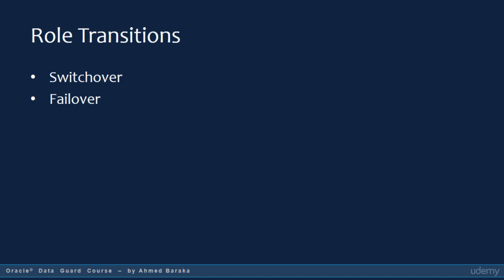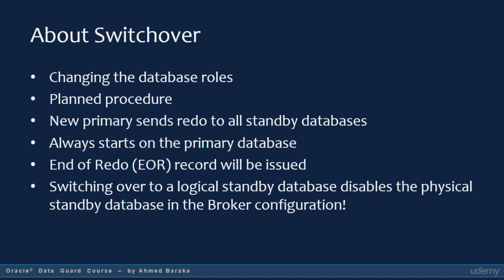In Data Guard, role transition is performed by doing one of two procedures: switchover or failover. You implement Data Guard in the first place to eventually perform one of those two procedures. Switchover is the process of changing the primary database to a standby role and changing one of your standby databases to the primary role. This procedure is a planned procedure — you as a DBA could decide to do it as part of testing the DR solution, or when some changes are planned in the primary database system side.